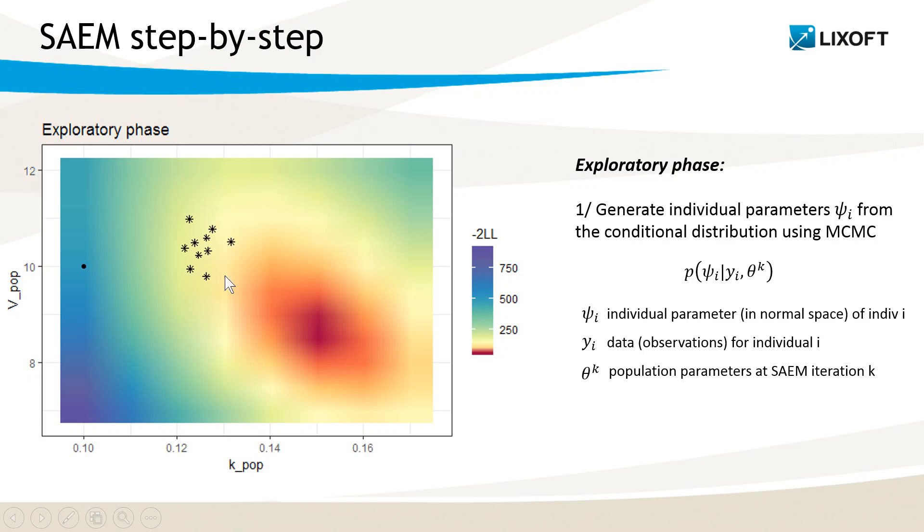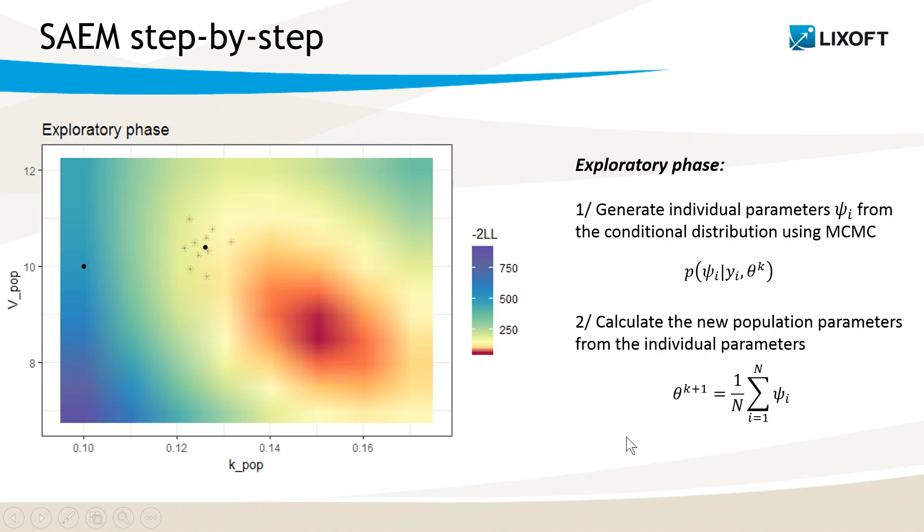In a second step, I calculate the new population parameters at iteration k plus 1 by simply averaging over the sampled individual parameters. This leads to the black dot here, so the value of kpop and vpop at iteration k plus 1.